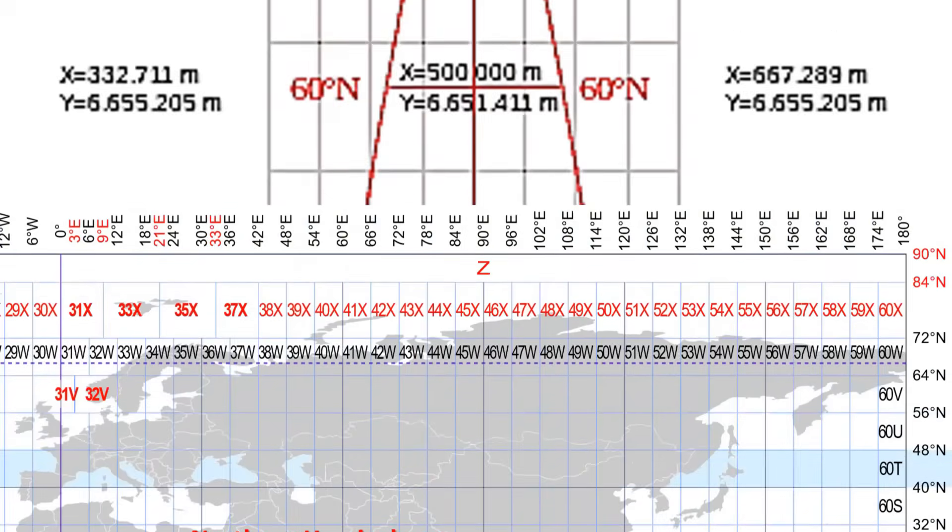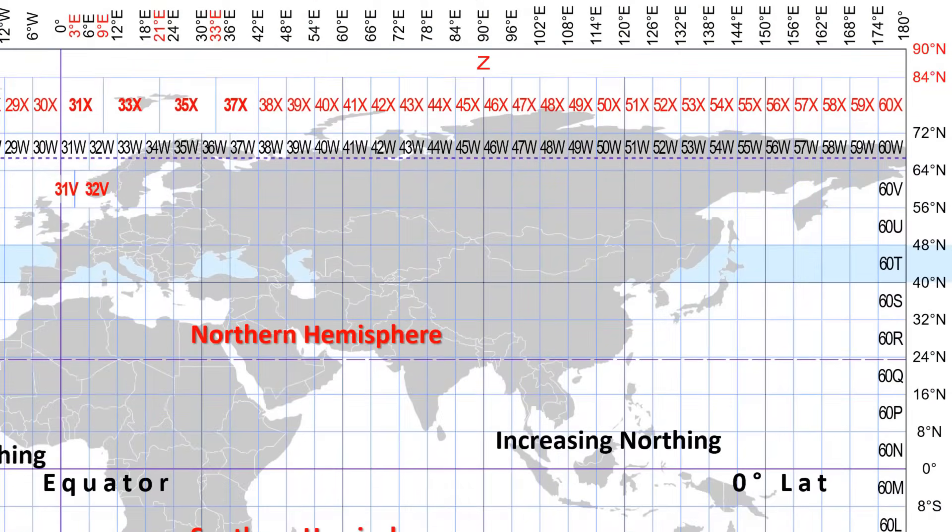In the UTM system, we use the terms Easting and Northing. As you go towards East, your Easting will increase, and as you go towards West, your Easting will decrease. So with the change of longitude, your Easting number will increase or decrease. As you go North, your latitude number increases, and so will the Northings.